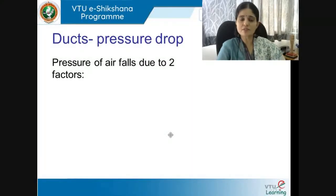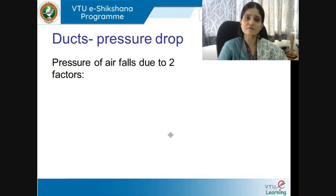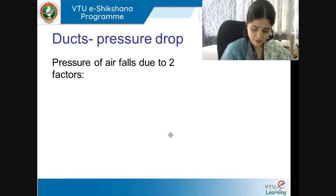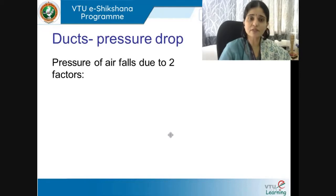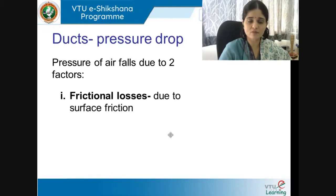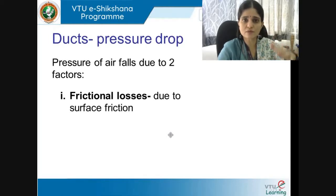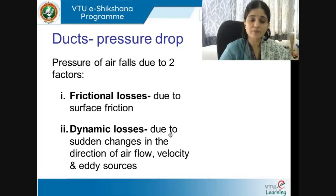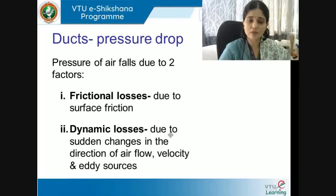Pressure drop is a serious concern in duct design. The pressure of air falls due to two factors: frictional loss — because something moving on a surface encounters friction — and dynamic loss, which is due to sudden changes in the direction of airflow, velocity, and eddy sources.